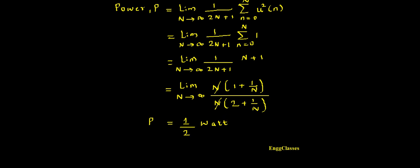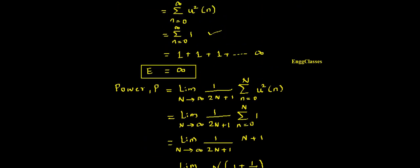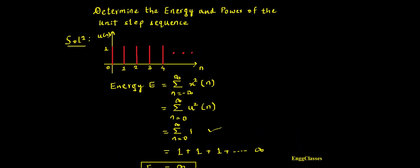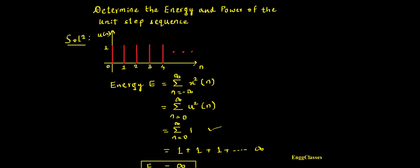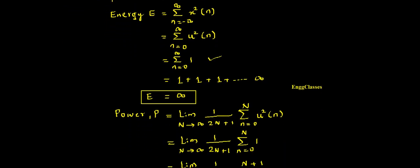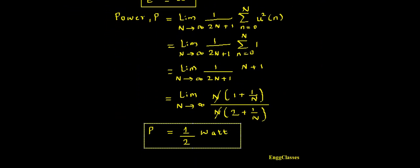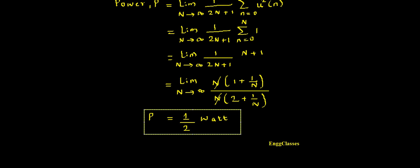The unit of power is Watt. So this is the solution for this numerical. The given numerical is to find the energy and power of a unit step sequence u(n). The energy is infinity and its power is 1/2 Watt. I have explained this numerical step by step. If there are any doubts, let me know in the comment section and I am happy to answer those doubts. Thank you so much for watching.